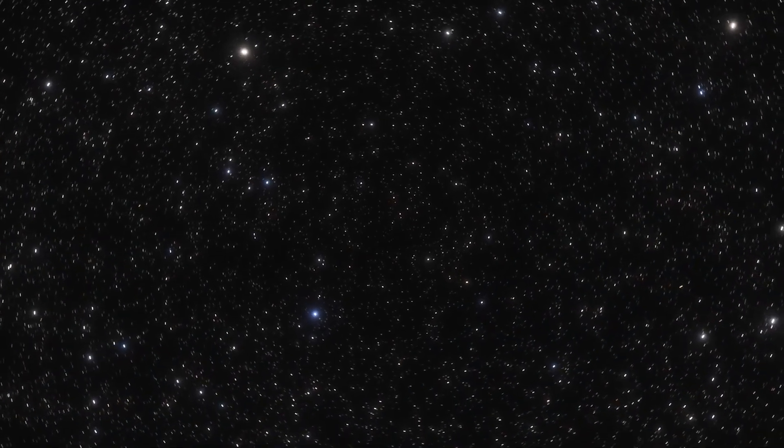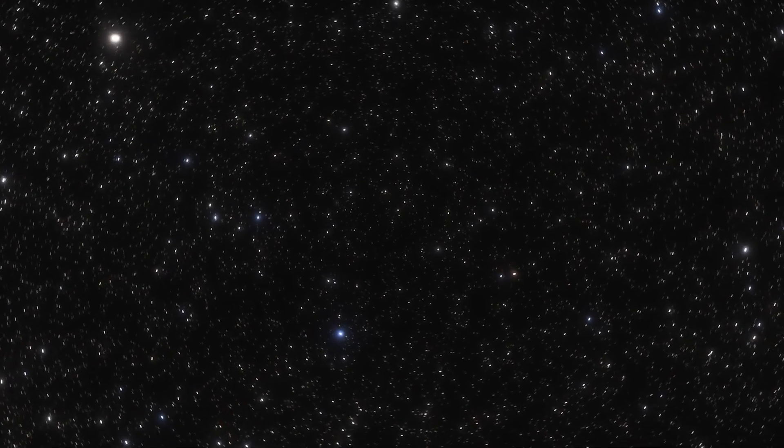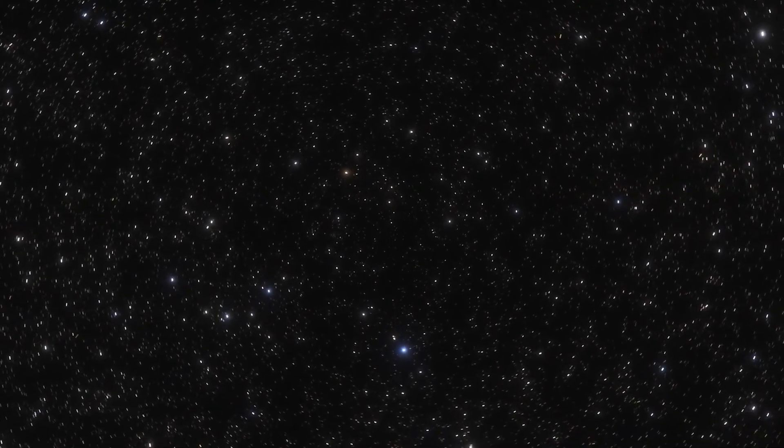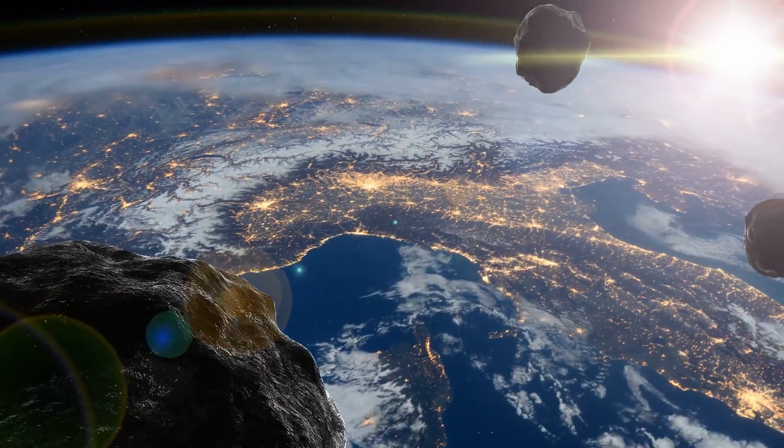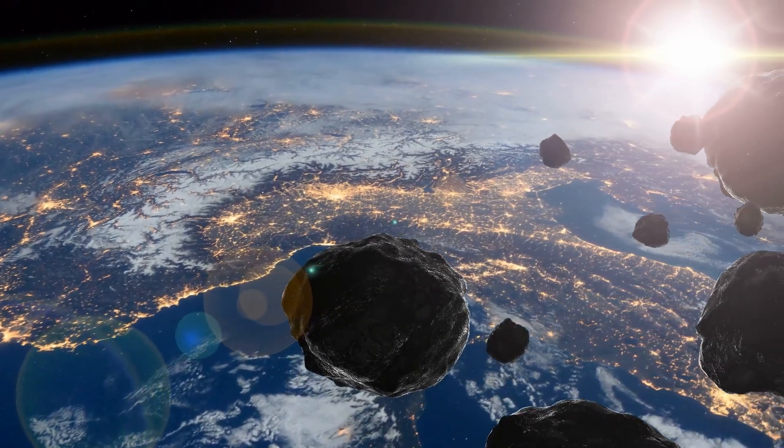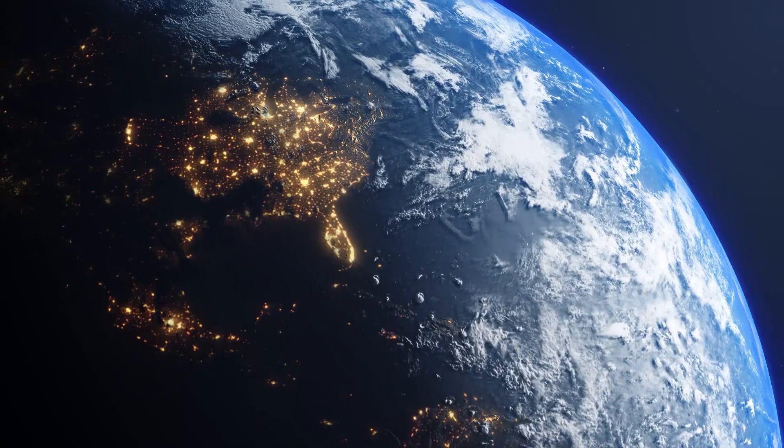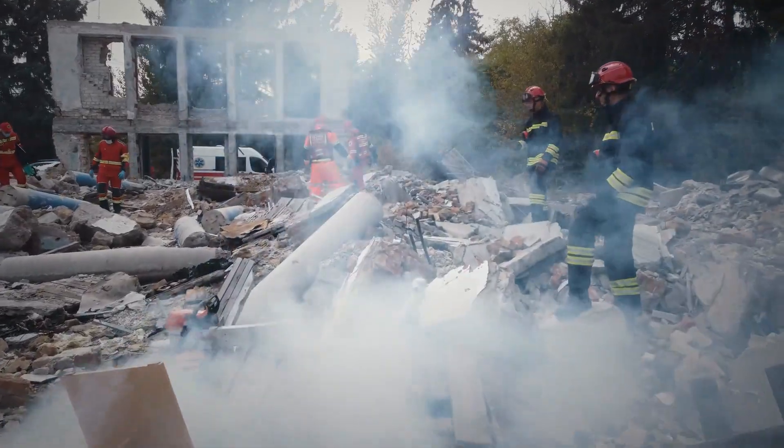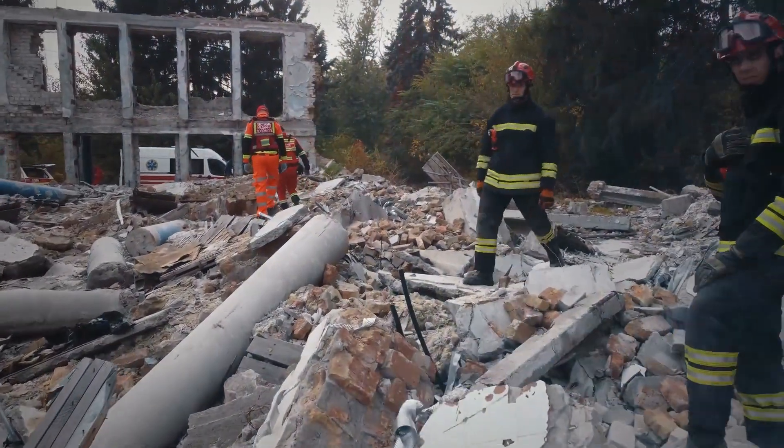These space rocks are fascinating in a way. They're like time capsules holding secrets from billions of years ago when our solar system was just taking shape. But they can also be a bit scary. After all, a big enough asteroid smacking into Earth could be bad news. We're talking about potential global consequences, from tsunamis and earthquakes to climate changes that could really shake up life as we know it.